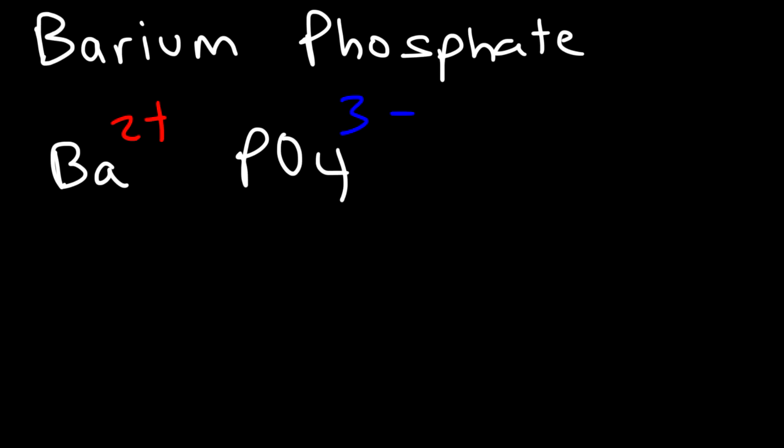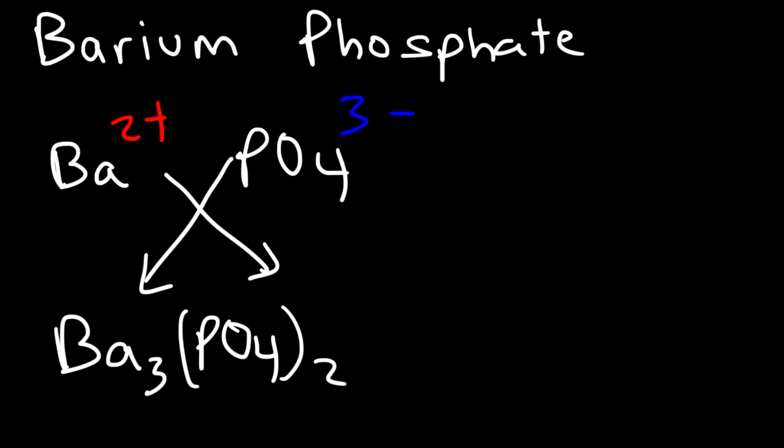Now using what some call the crisscross method, this is going to be Ba3PO4 times 2. But because we have a polyatomic ion, because we have multiple polyatomic ions rather, we need to enclose the PO4 ion in parentheses. And so that's how you can write the chemical formula for barium phosphate. So anytime you have multiple polyatomic ions, make sure you surround it in parentheses.